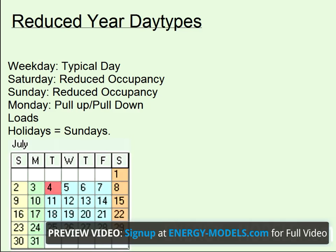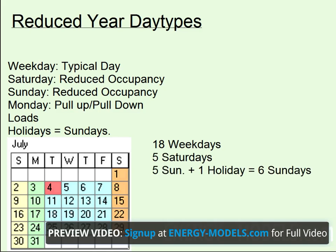If we look at July in the reduced year calendar, we notice there are 18 weekdays, five Saturdays, five Sundays plus one holiday — or six Sundays — and five Mondays.